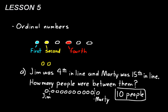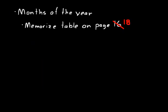Now let's look at page 16 and talk about months of the year. We can use ordinal numbers to help us understand the months of the year. For example, the first month of the year is January and the twelfth month is December. That table shows you the order of the months and how many days are in each month. Notice February has twenty-eight or twenty-nine days, depending on whether or not it's a leap year. Make sure you memorize that table on page 16.